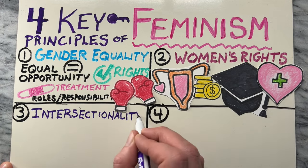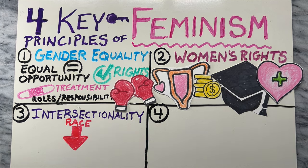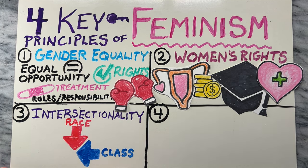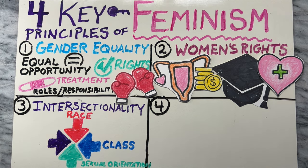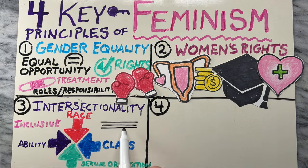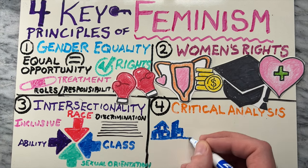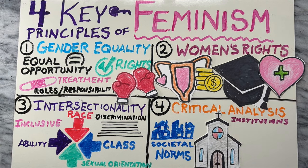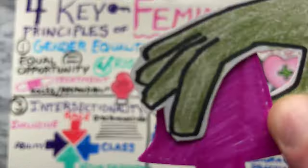Third is intersectionality. Recognizing that individuals experience oppression differently based on various intersecting factors, such as race, class, sexual orientation, and ability, feminism strives to be inclusive and address multiple layers of discrimination. Lastly is critical analysis. Feminism encourages a critical examination of societal norms, institutions, and cultural practices that contribute to the subjugation of women and marginalized genders.